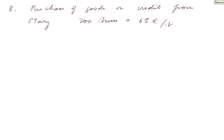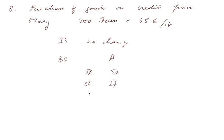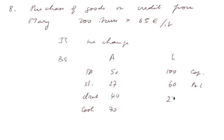We purchase more goods on credit from Mary — 200 items more, this time at another price again. IS no change. Balance sheet assets: fixed assets 50, stock now 14 plus 13 equals 27, client owes us 40, cash 70. Liability side: capital 100, P&L unchanged, and now we owe Mary 27,000. She is a supplier.